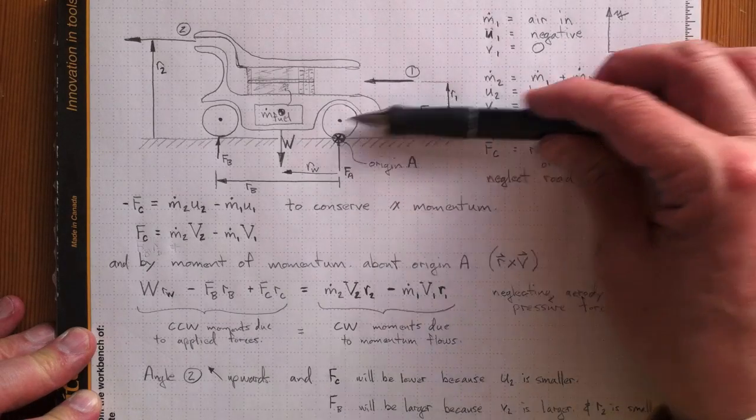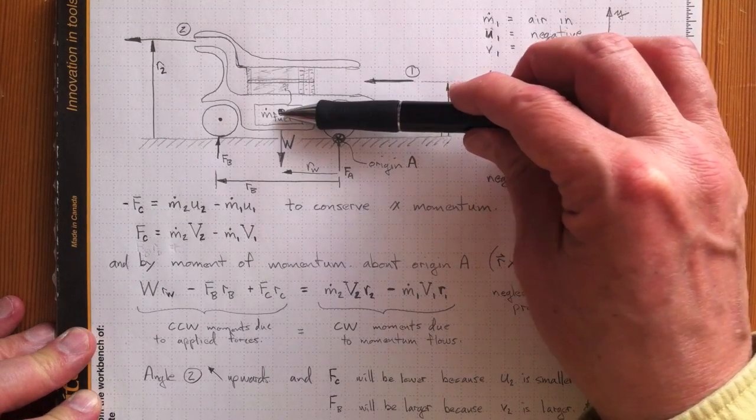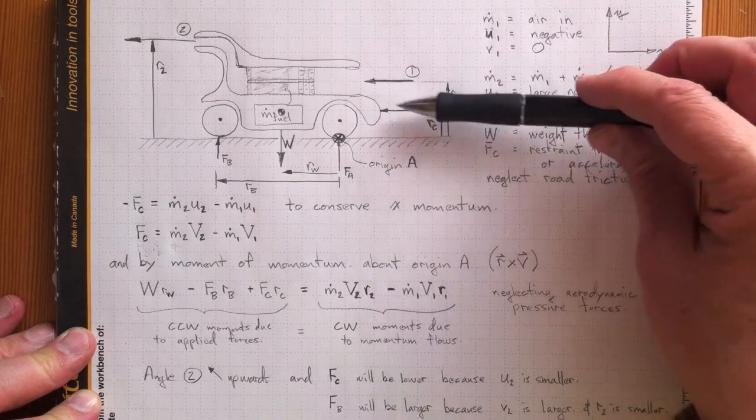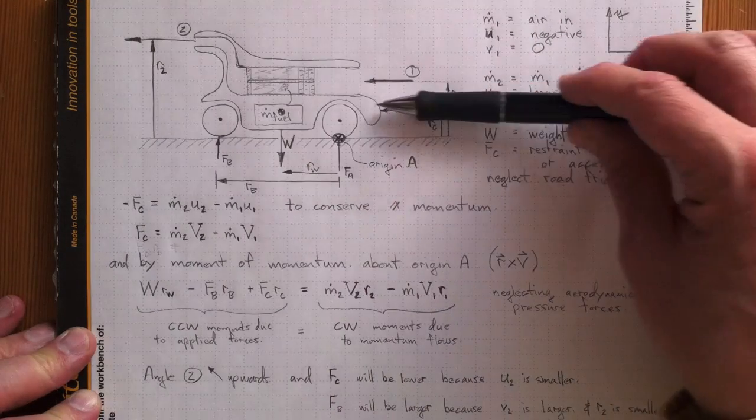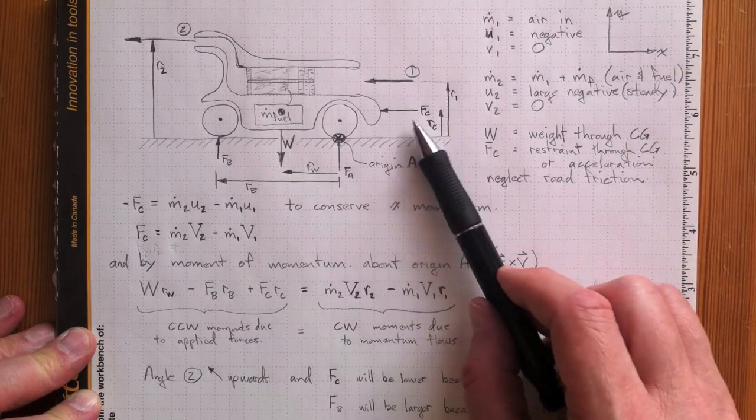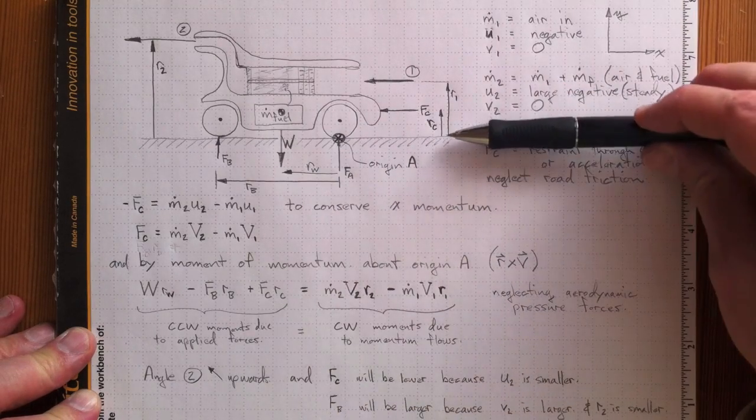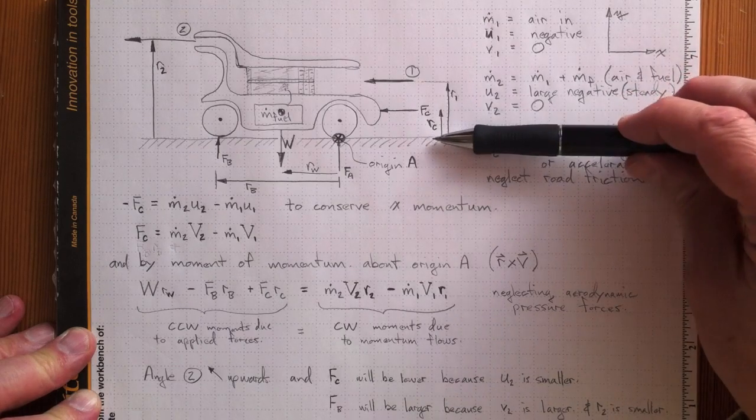And if we orient that Fc so it runs through the center of mass of the whole car, then that Fc could just as easily be an acceleration in this direction. So there's Fc acting through the center of gravity at some distance, Rc, above the pavement here.